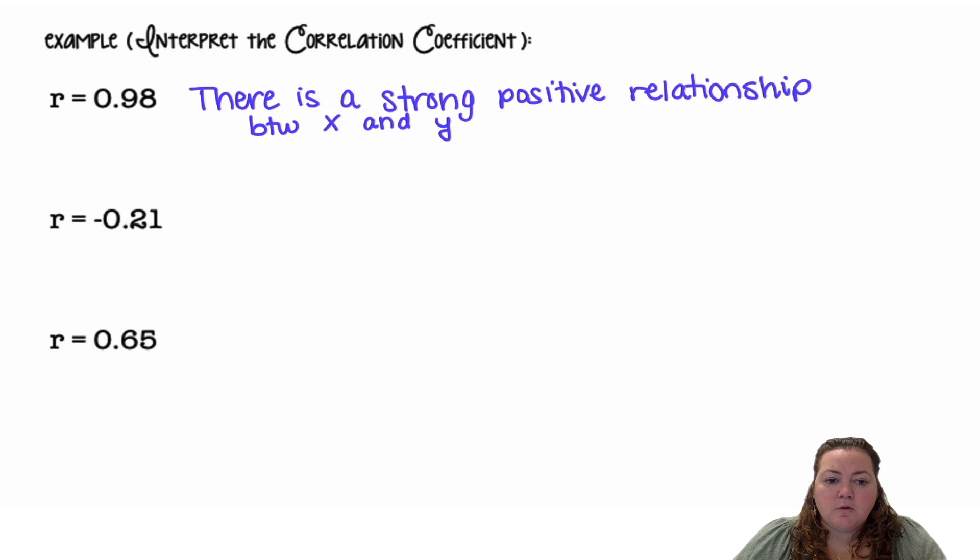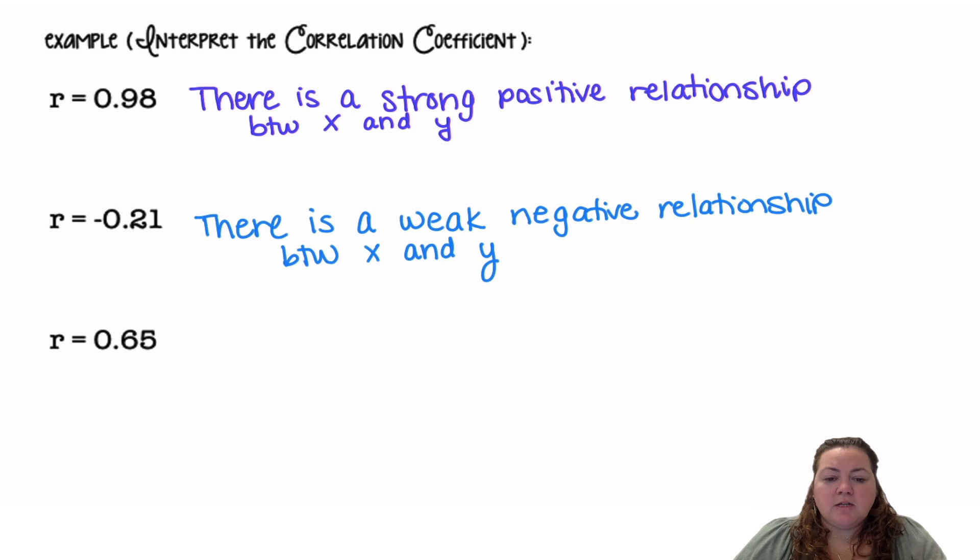The next one, R equals negative 0.21. So it's negative, and it's not very close to 1, so it's weak. There is a weak negative relationship between X and Y.